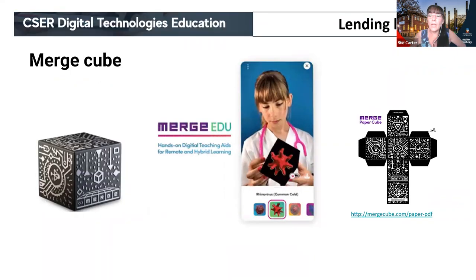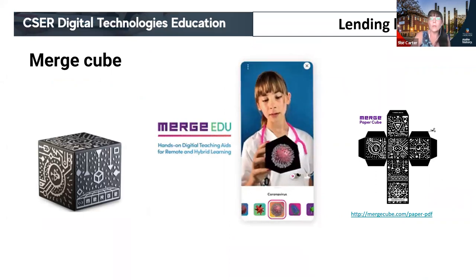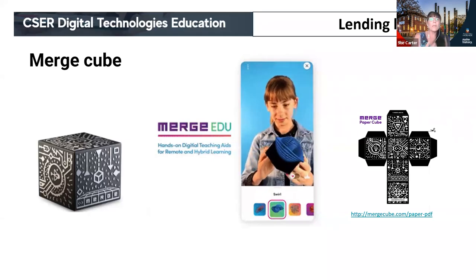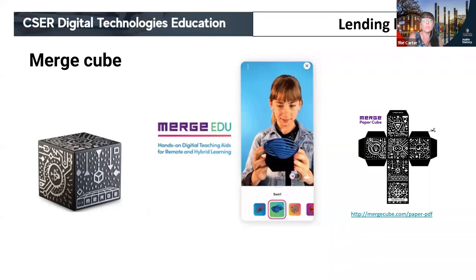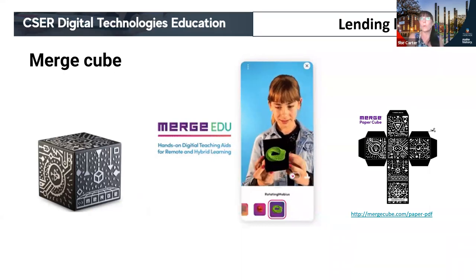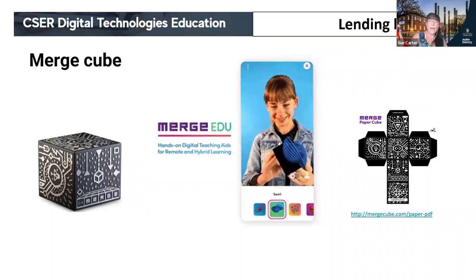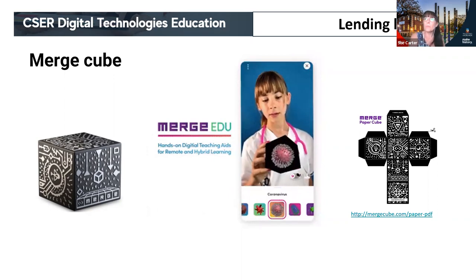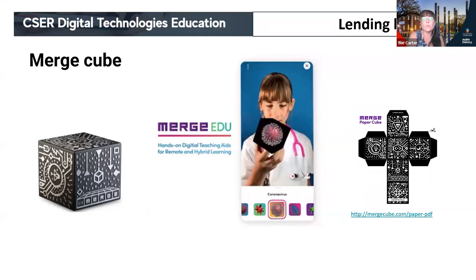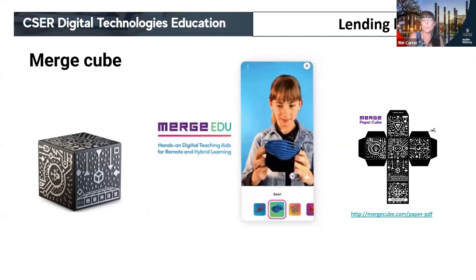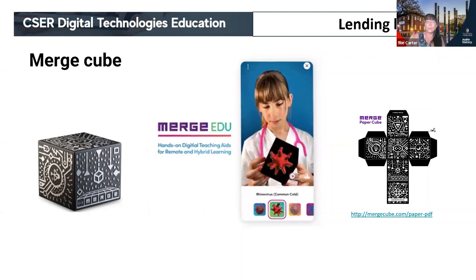Let's move on to the next tool in the kit — the Merge Cube. This is an augmented reality trigger where each side of the cube has a distinct pattern recognised by Merge Cube apps. It allows you to hold augmented reality or a hologram in your hand. If you don't have a Merge Cube, or only have four in the kit, students can always make their own from a paper net — ideally printed on A3 card for strength. That is an activity in itself where students go from a 2D net into a 3D shape.